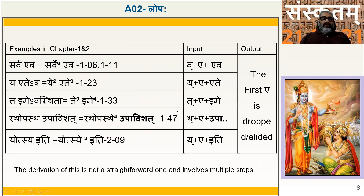Let us look at various examples. We have 'Sarva Eva' — actually 'Sarve Eva' — where there is an Ekara Lopam. 'Sarva Eva Maharatah' comes in the 1st chapter 6th Sloka and 1st chapter 11th Sloka.